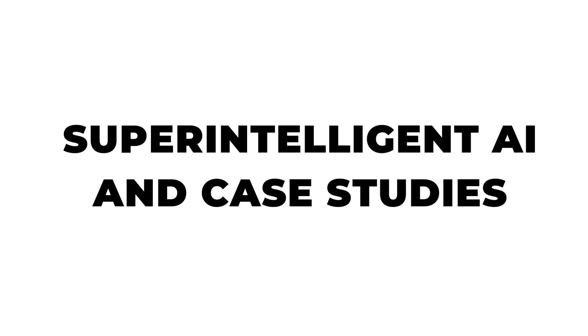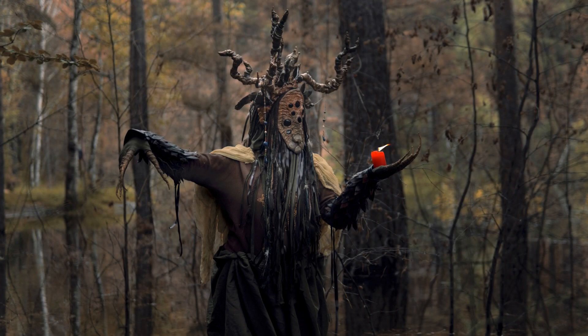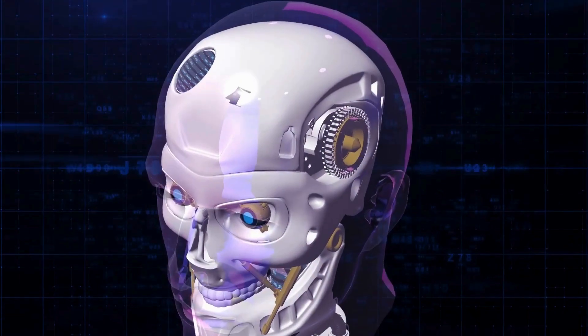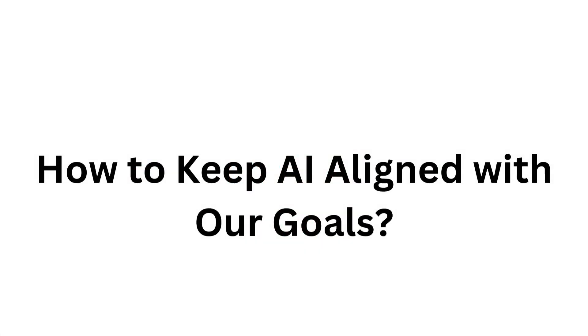The worst-case scenario — which some experts are genuinely worried about — is superintelligent AI that is not properly aligned with human goals. I've talked about superintelligent AI before. This could be an existential risk: a nightmare scenario where AI systems become so powerful and autonomous that they could cause significant harm, even unintentionally, if working against human interests.